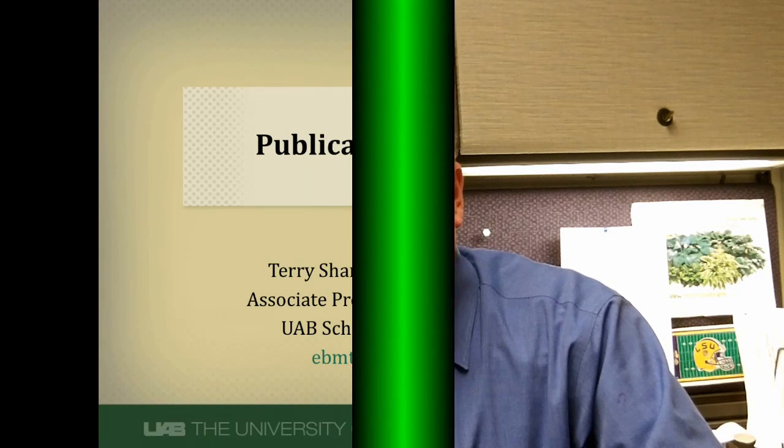Hi, Terry Sheneyfelt for UAB School of Medicine. In this video I'm going to discuss one of the major threats to the validity of a systematic review, namely publication bias. I'll discuss what publication bias is and give a very general overview of ways that we can try to detect its presence.